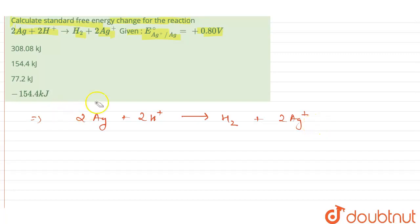So if you see this, Ag is in 0 oxidation state initially. It is moved to +1 oxidation state. So this is loss of electron, which means that oxidation is happening. And oxidation happens over anode.